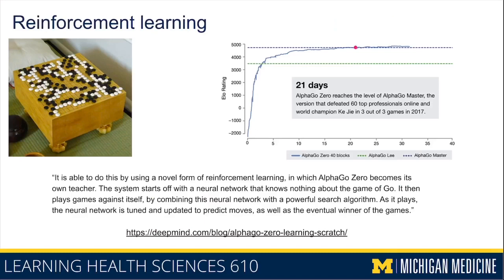That's a key example of what makes reinforcement learning different from other types of machine learning. An example that was in the news over the last couple of years is an algorithm built by the DeepMind team, which is now part of Google, to play the game called Go.